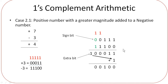Next is Case 2. The first part is a positive number with a greater magnitude added to a negative number — for example, positive 7 is greater than the negative number. You are going to convert 7, which will be 111, and then add two zeros in front to make it a 5-bit number.